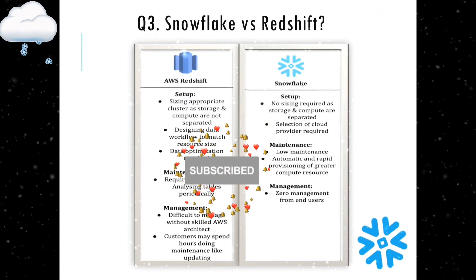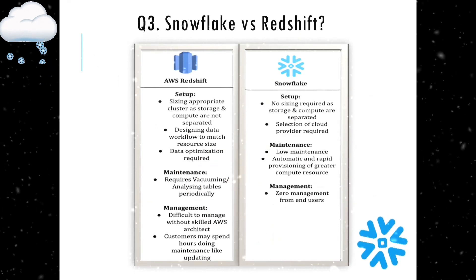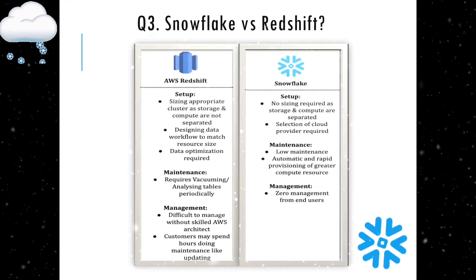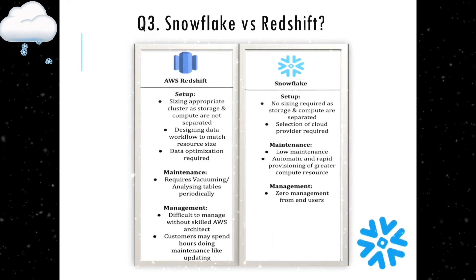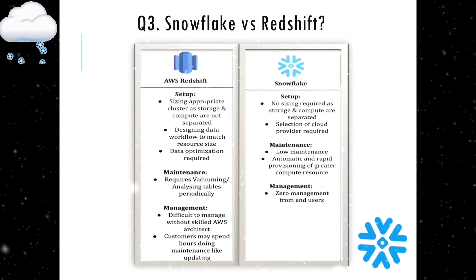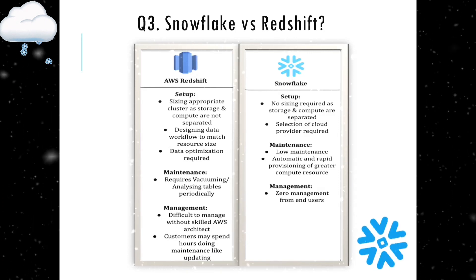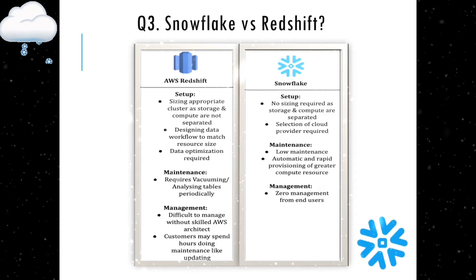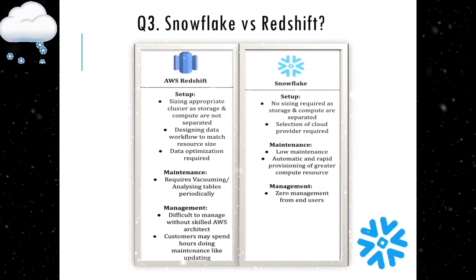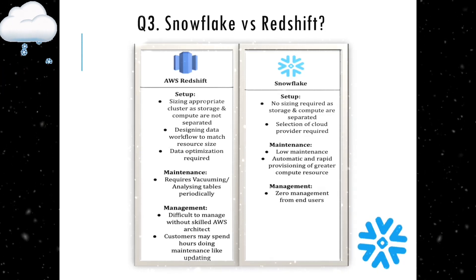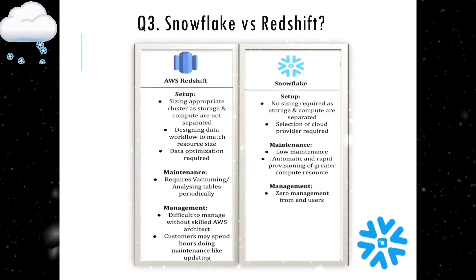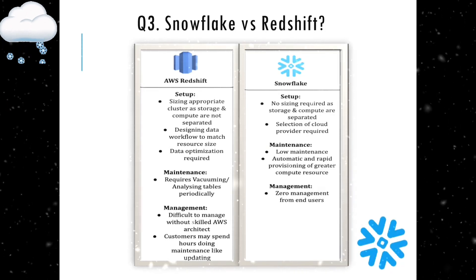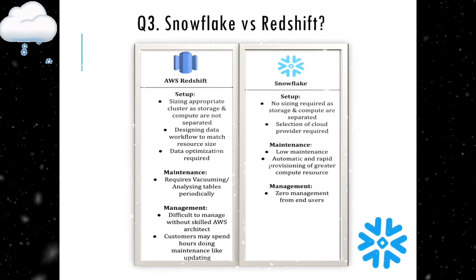The next question is: what is the difference between Snowflake and Redshift? Both are very famous data warehousing services. Snowflake is provided by the Snowflake company itself, while AWS Redshift is a native AWS cloud service. With Redshift, vacuuming and periodic table analysis is required, but with Snowflake there is zero maintenance required from the end user.